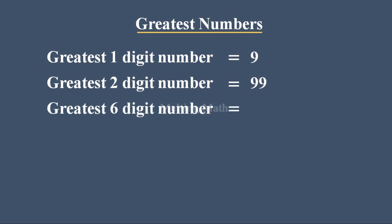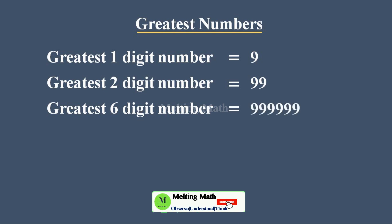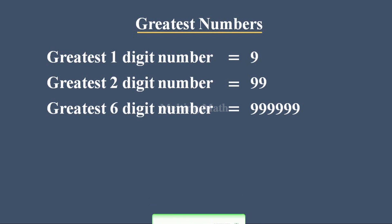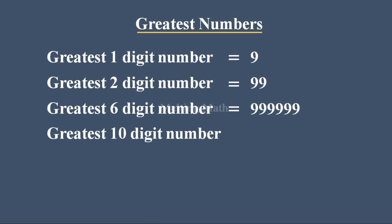See the question — they ask the greatest number and how many digits, that is a 6-digit. Just write 6 digits of 9 — that is the greatest six-digit number. Next, if they ask the greatest 10-digit number, just write 10 digits of 9. If they ask the greatest digit number, first see how many digits they asked, then put that many digits of 9.